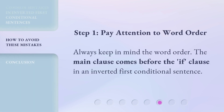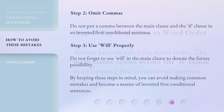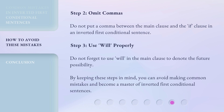Step 1: Pay attention to word order. Always keep in mind the word order — the main clause comes before the if clause in an inverted first conditional sentence. Step 2: Omit commas. Do not put a comma between the main clause and the if clause. Step 3: Use 'will' properly. Do not forget to use 'will' in the main clause to denote future possibility. By keeping these steps in mind, you can avoid making common mistakes and become a master of inverted first conditional sentences.